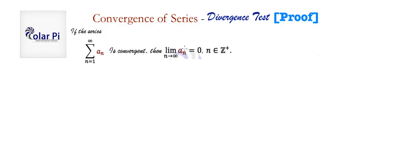Said differently, if the limit as n goes to infinity of a_n is not equal to 0, then this infinite series diverges.